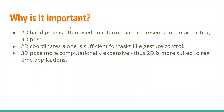Why is it important? 2D hand pose is often used as an intermediate representation in predicting 3D hand pose. This 3D hand pose involves another coordinate for each key point denoting the depth relative to a reference. 2D information alone is also sufficient for tasks such as gesture control over a flat screen, and 3D pose is more computationally expensive, making 2D hand pose more suitable for real-time applications requiring higher frame rates.